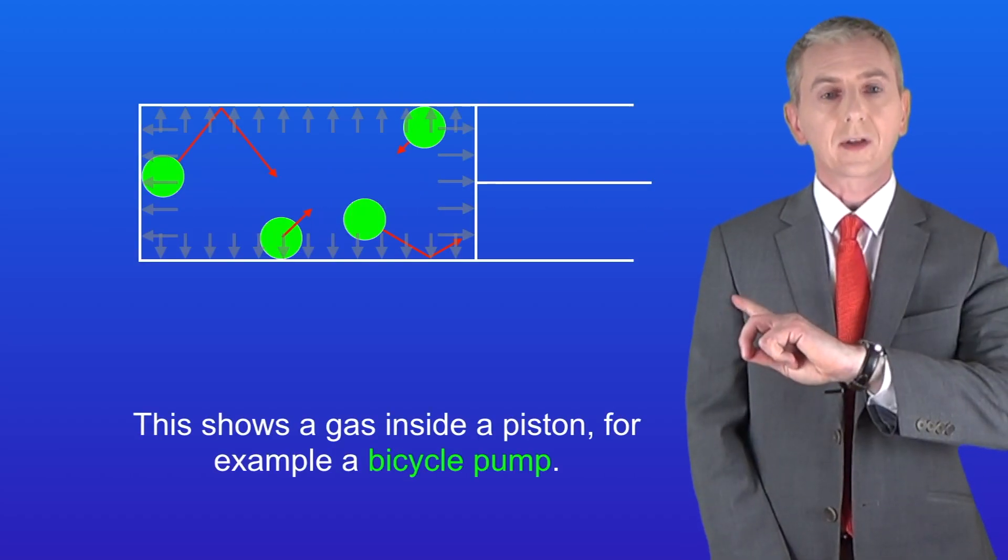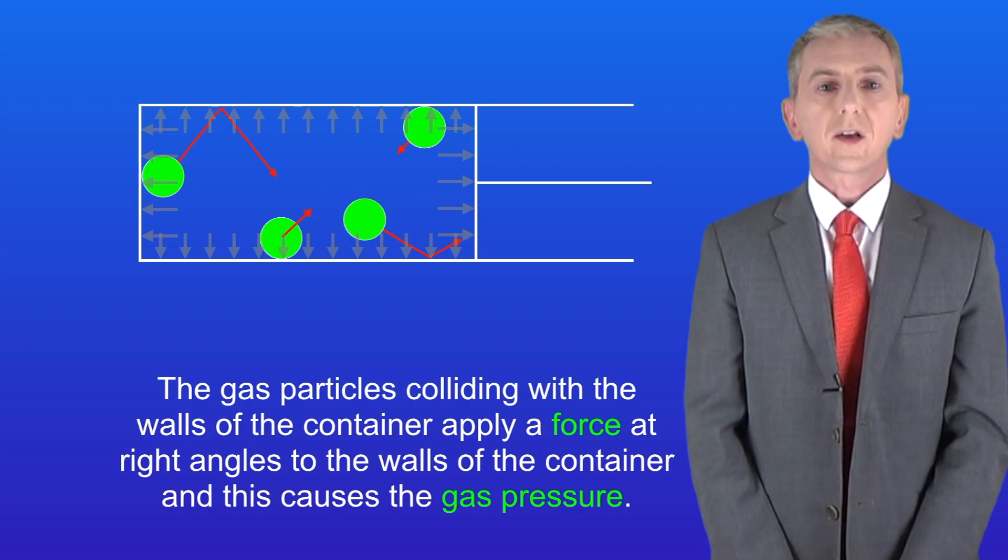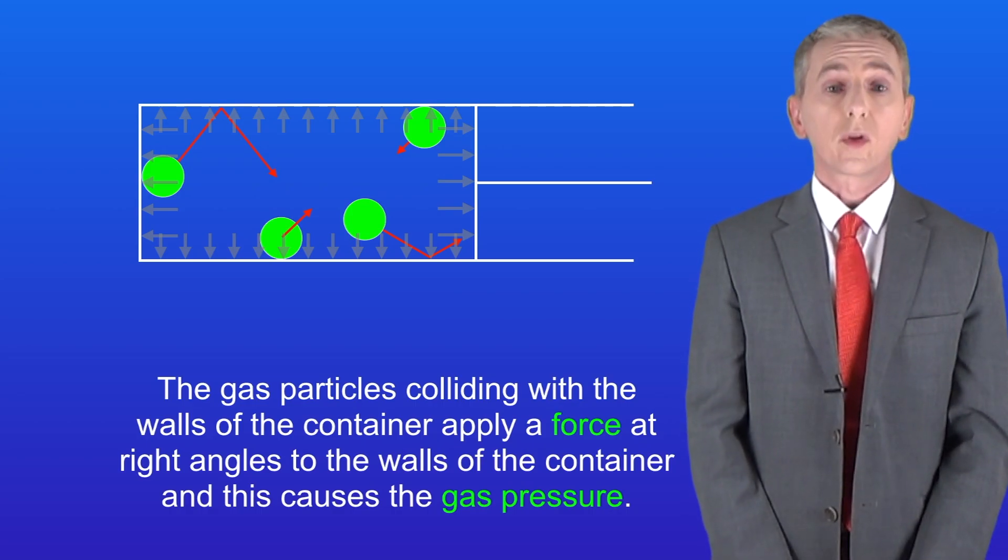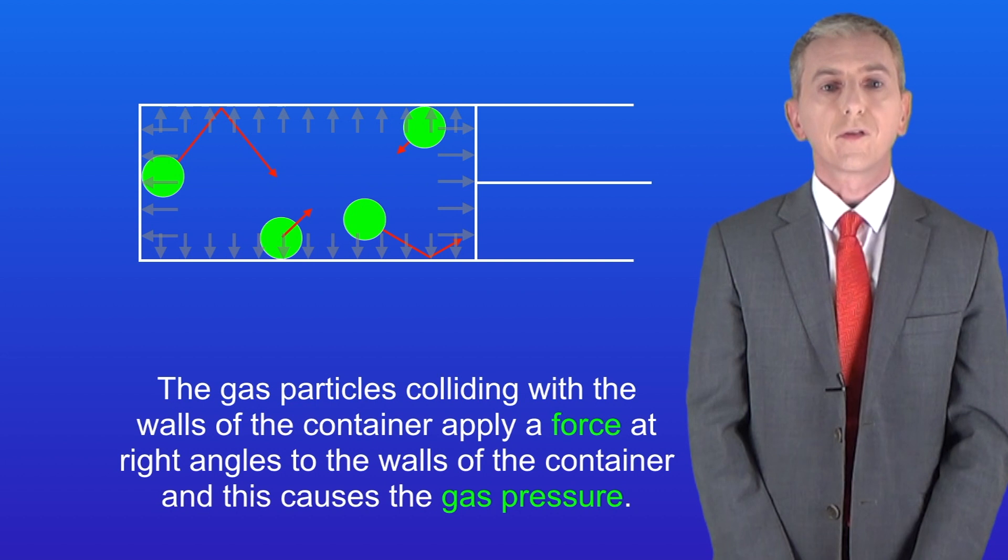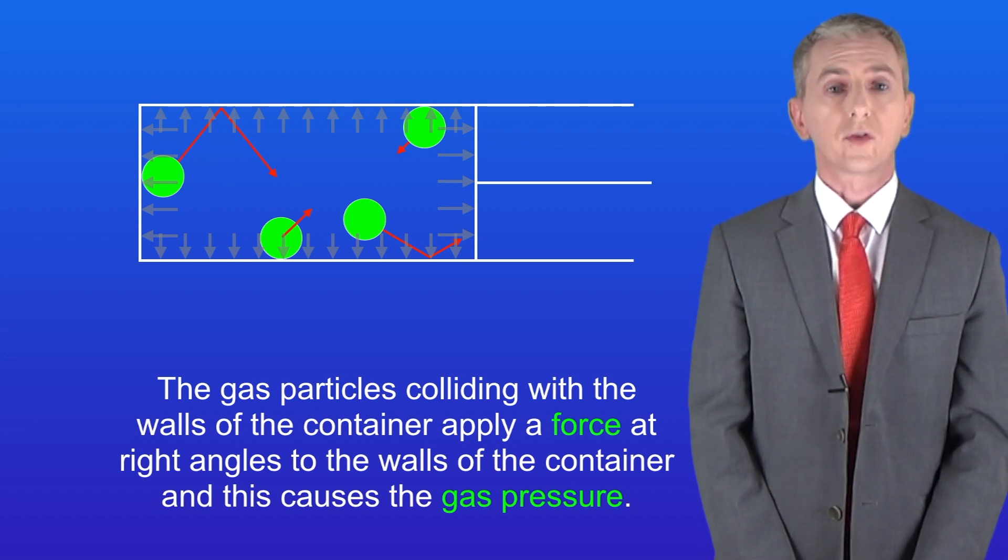I'm showing you here a gas inside a piston, for example a bicycle pump. As we said in a previous video, the gas particles colliding with the walls of the container apply a force at right angles to the walls of the container and this causes the gas pressure.